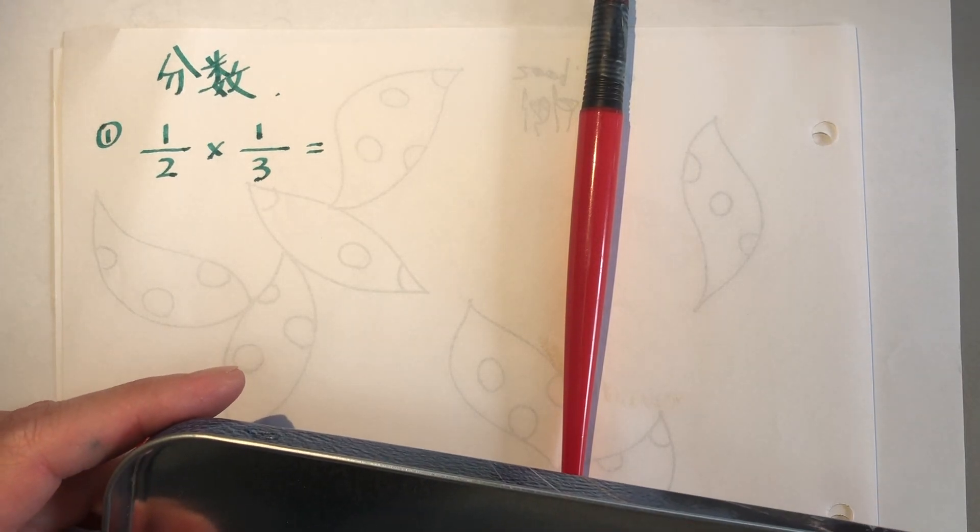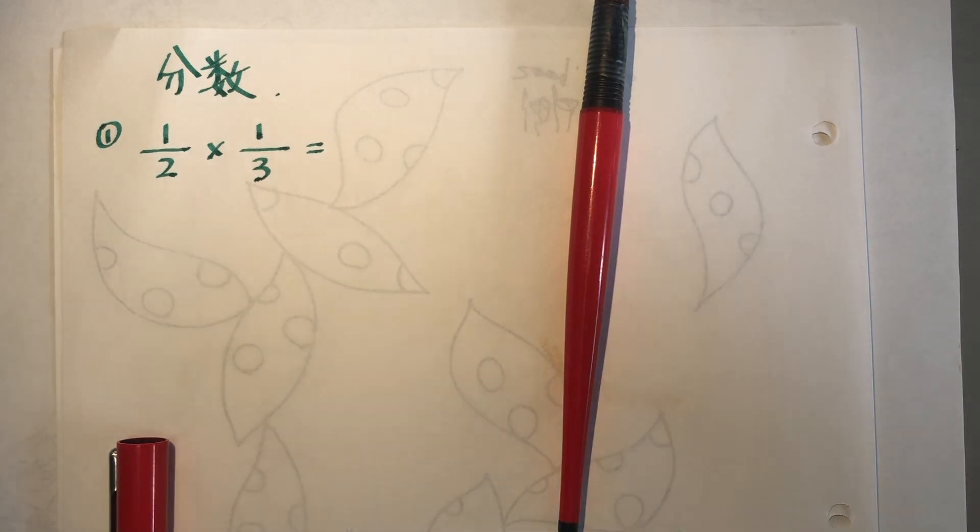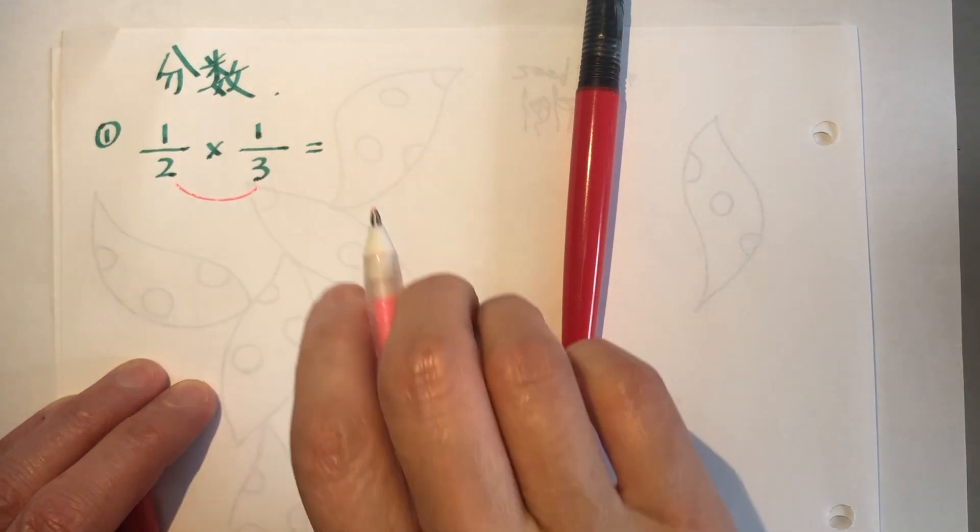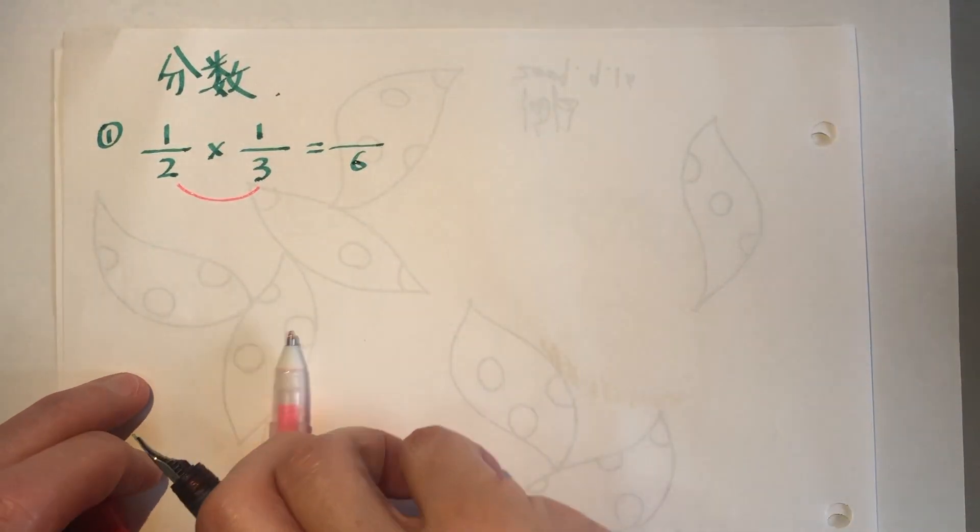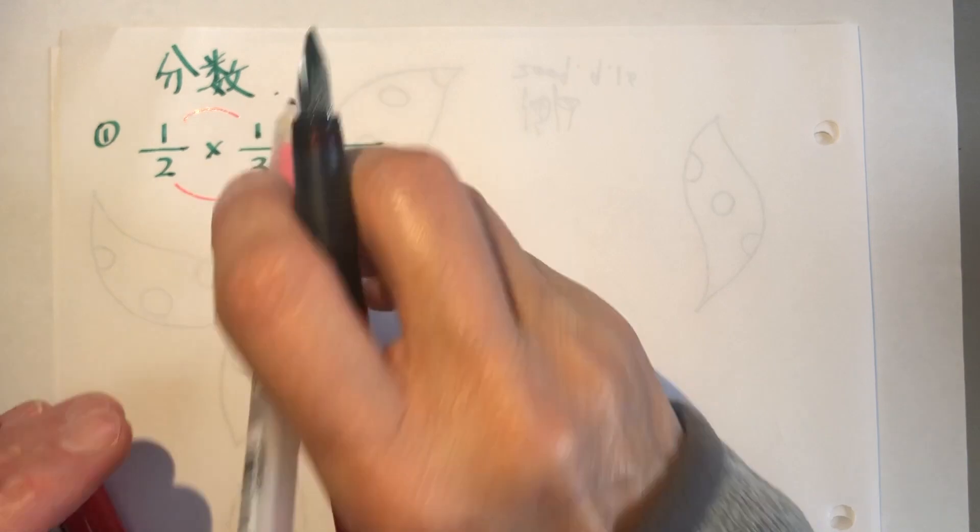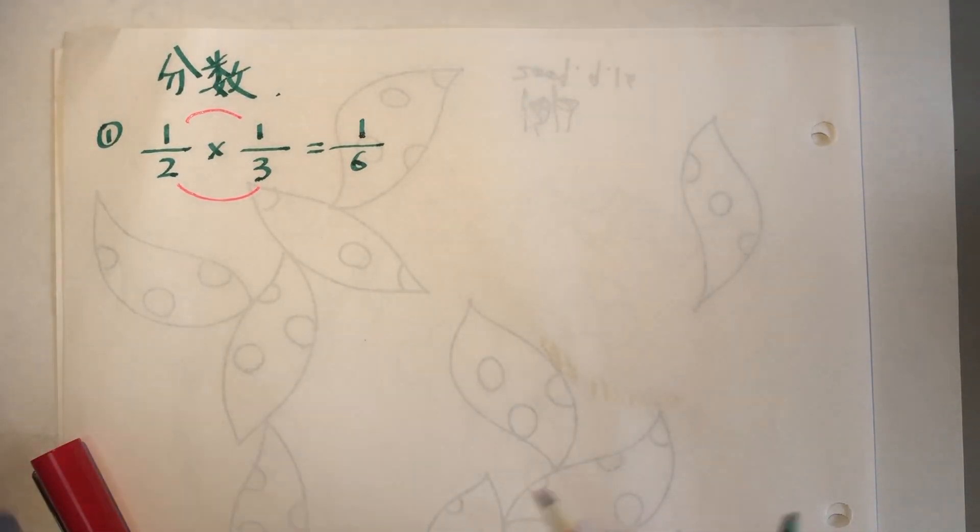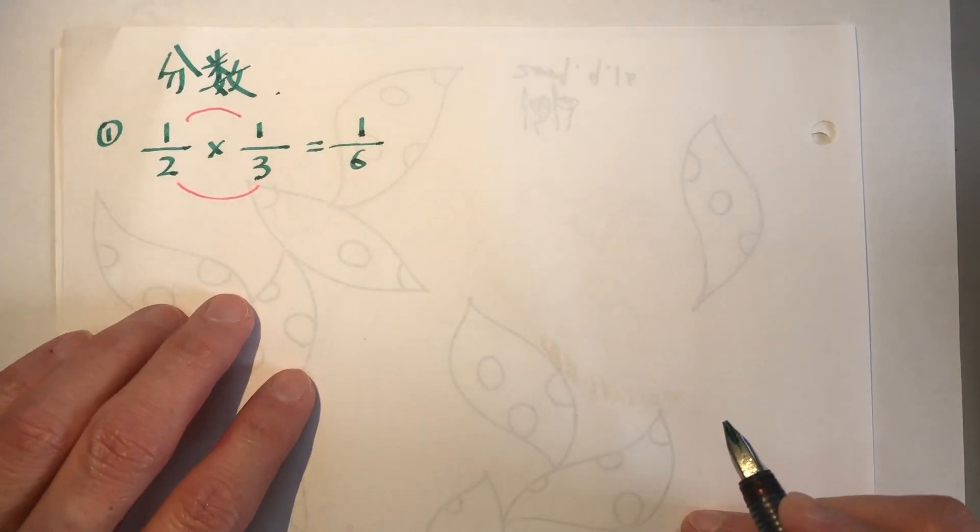Okay, I'm going to get another pen, another colored pencil. 2 times 3 equal to 6, 1 times 1 equal to 1, and that is it. So simple. And we will do exactly the same method, we exercise a few.